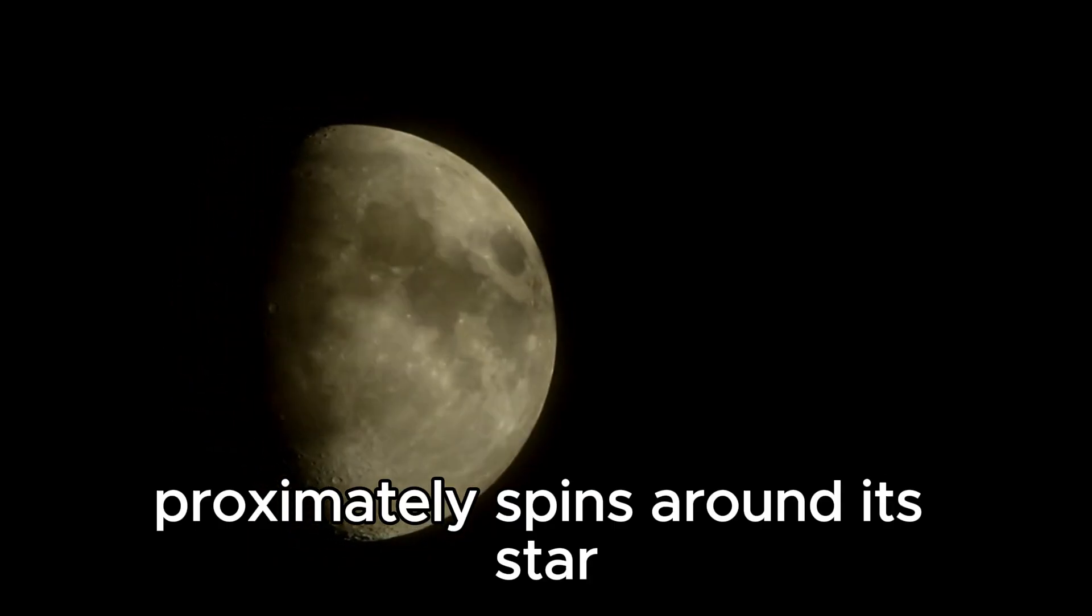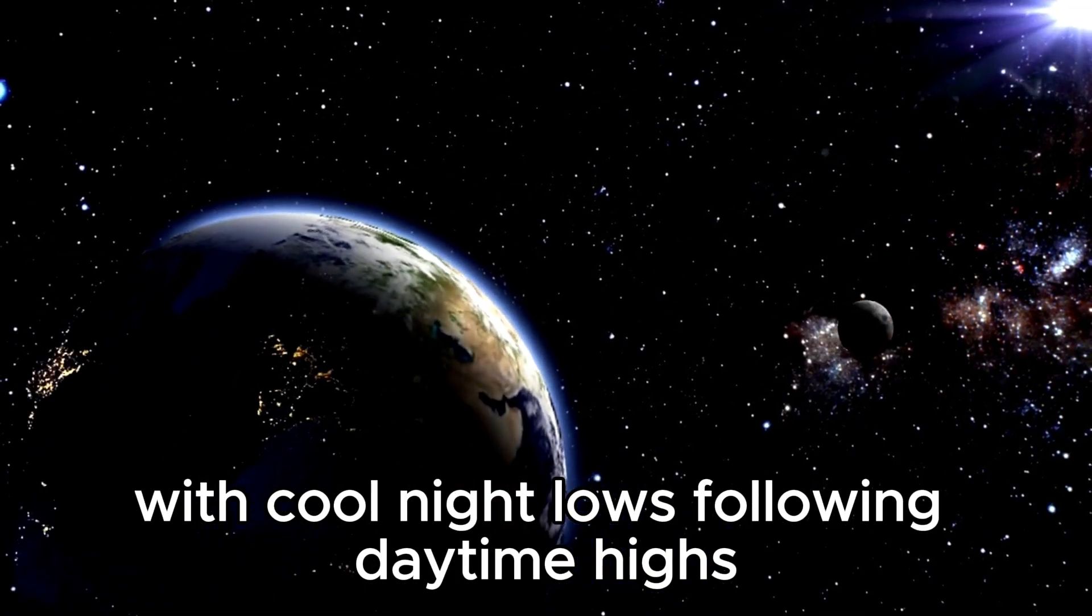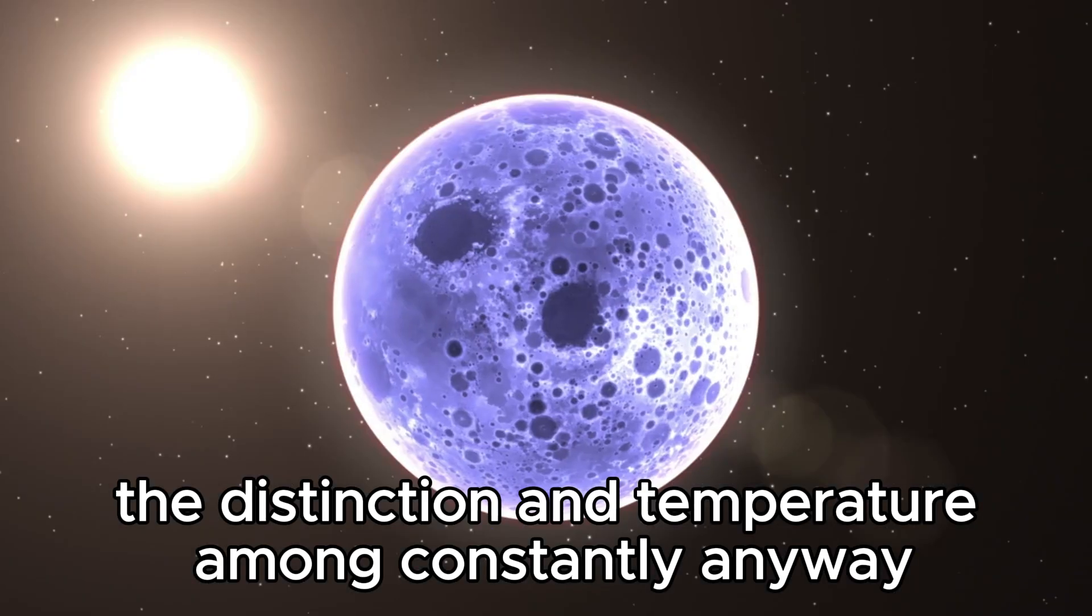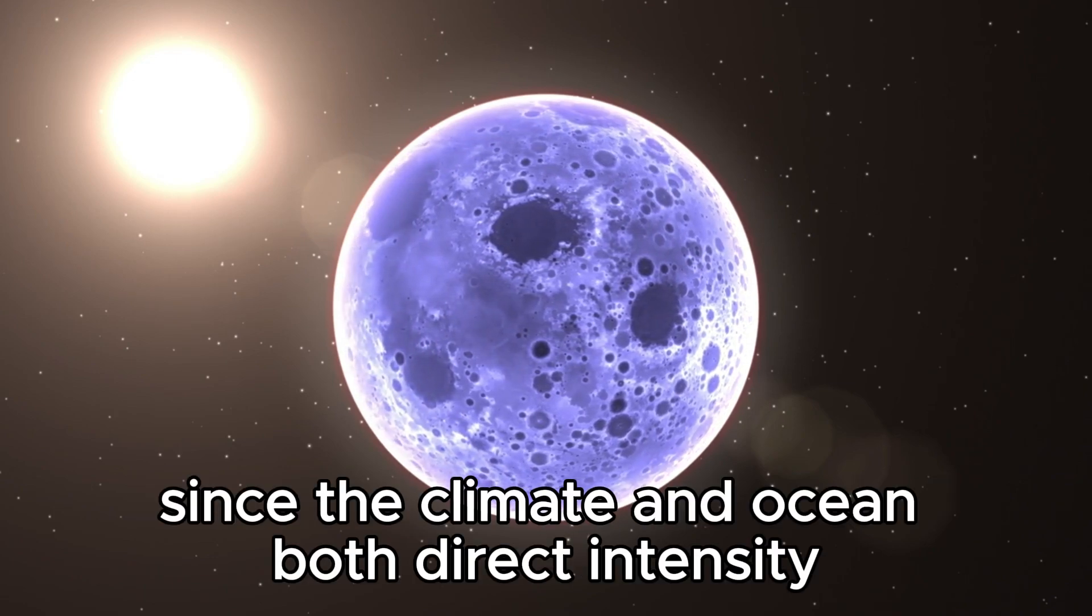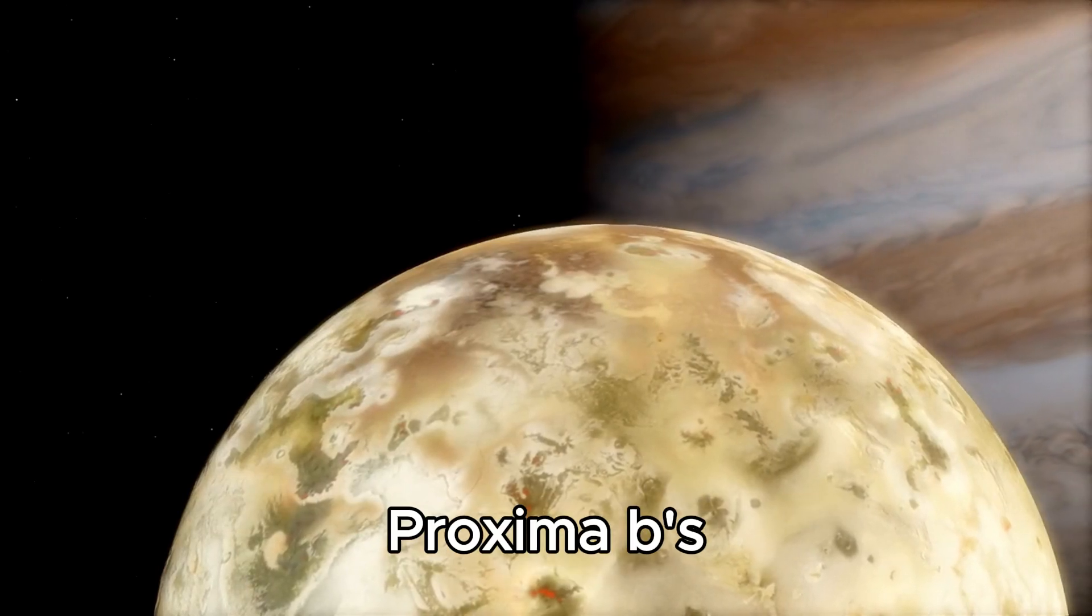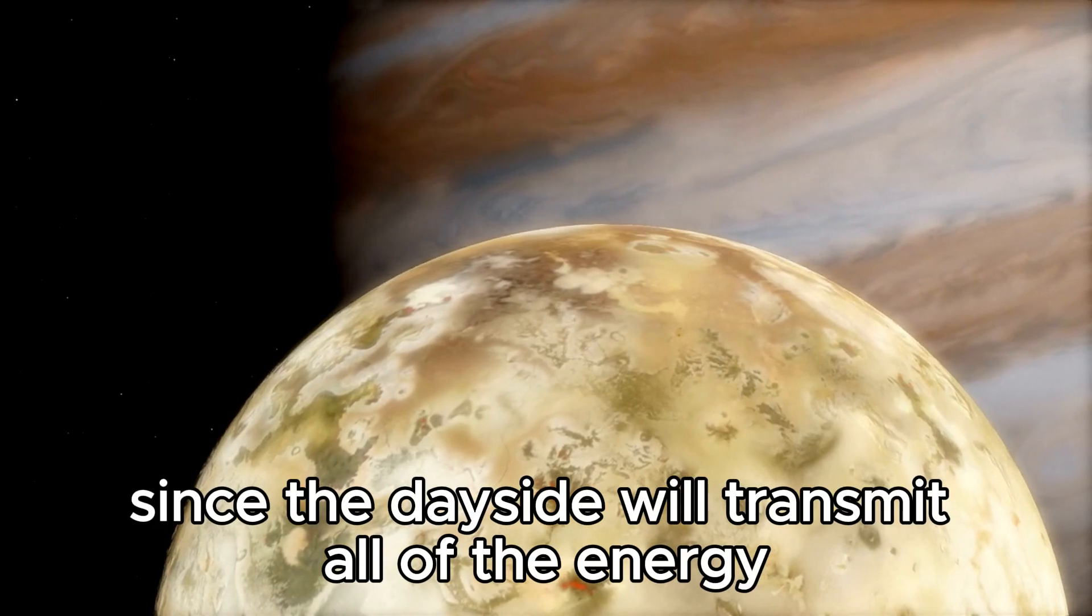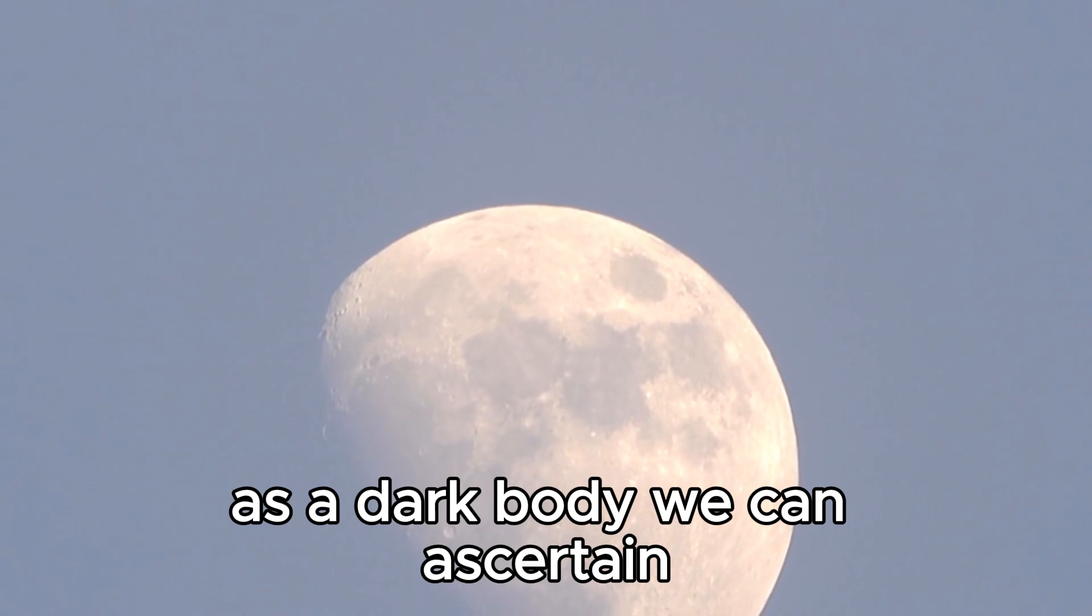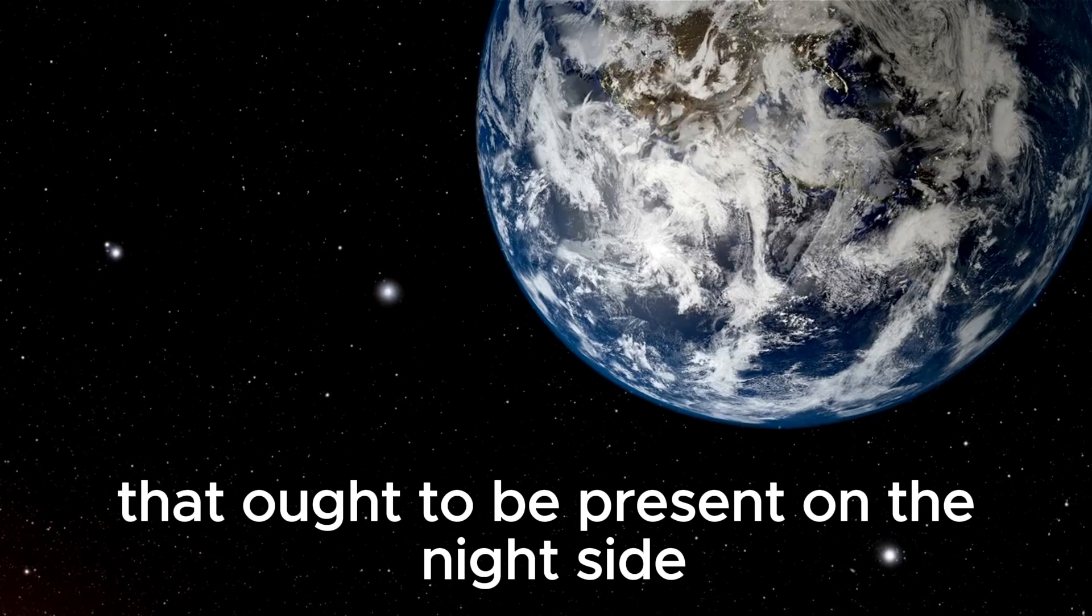Proxima b rotates around its star so that day and night are indistinguishable, with cool night lows following daytime highs. The distinction in temperature among day and night, anyway, relies upon whether the planet is fully made out of bare rock. Since the atmosphere and ocean both direct heat, if there isn't an atmosphere, Proxima b's day side and night side temperatures will contrast more. As a matter of fact, since the day side will transmit all the energy it gets from Proxima Centauri as a black body, we can calculate the exact measure of black body radiation that ought to be present on the night side.